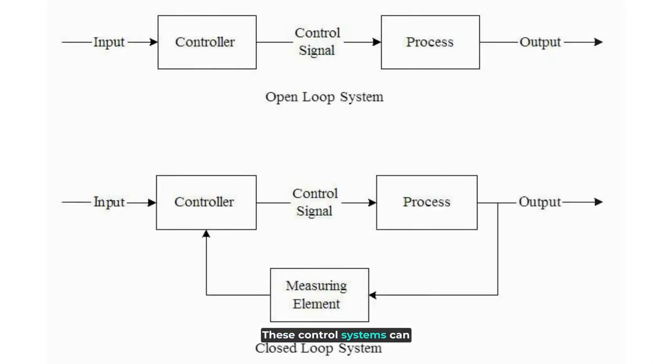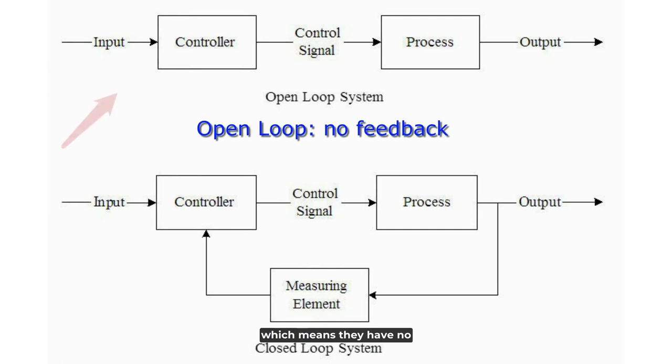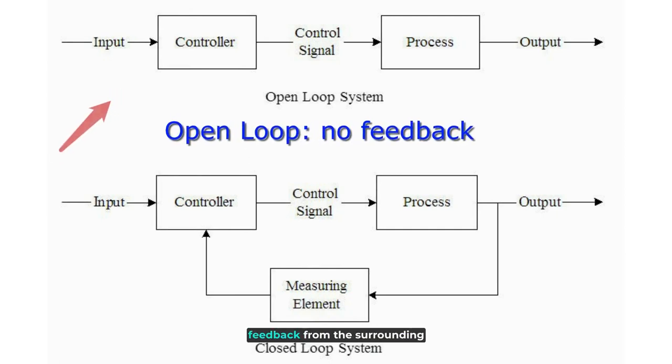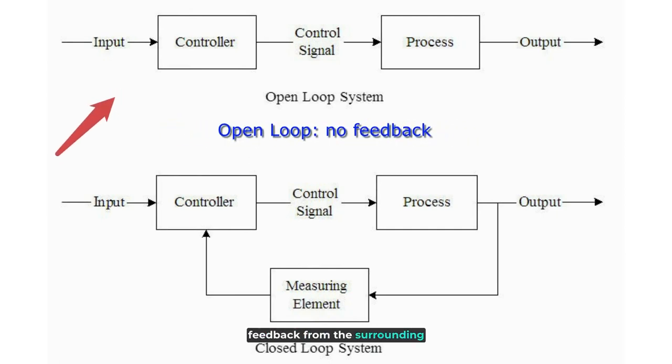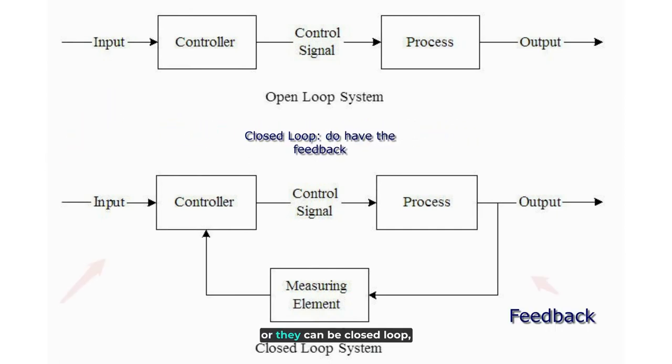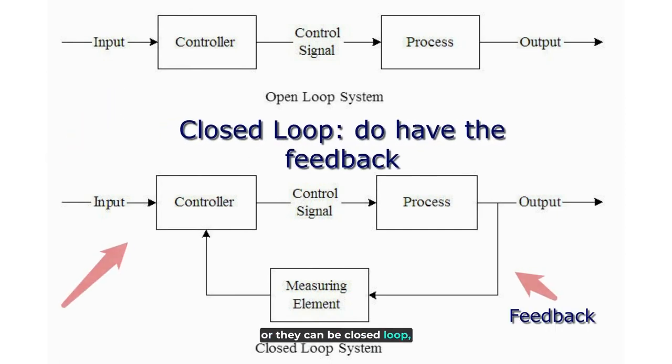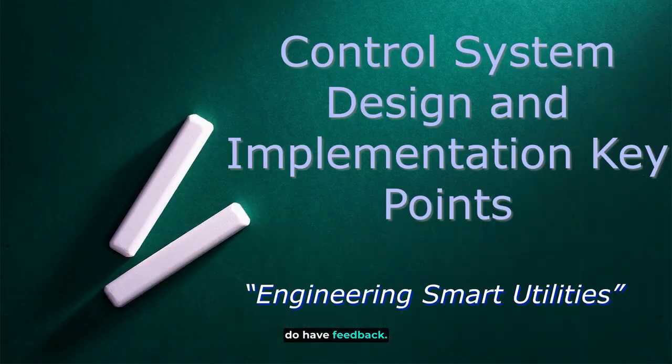These control systems can either be open loop, which means they have no feedback from the surrounding world, or they can be closed loop, which means that they do have feedback.